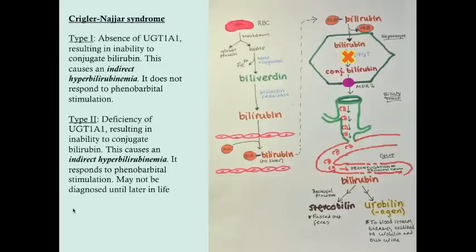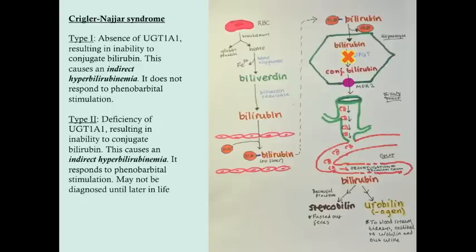Crigler-Najjar syndrome is the absence of the enzyme UGT1A1, which is responsible for conjugating bilirubin into conjugated bilirubin. There are various degrees of absence or deficiency of this enzyme. In Crigler-Najjar syndrome type 1, there is a complete absence of UGT1A1, so these babies are completely unable to conjugate bilirubin, causing severe indirect hyperbilirubinemia, and this will ultimately require liver transplant. In type 2 Crigler-Najjar syndrome, babies are just deficient in this enzyme — they'll probably develop indirect hyperbilirubinemia, but it won't be as severe.